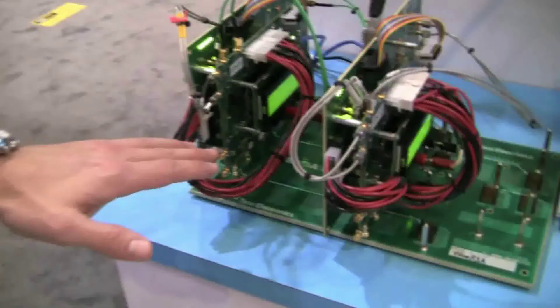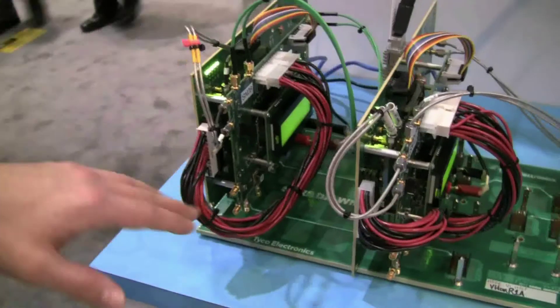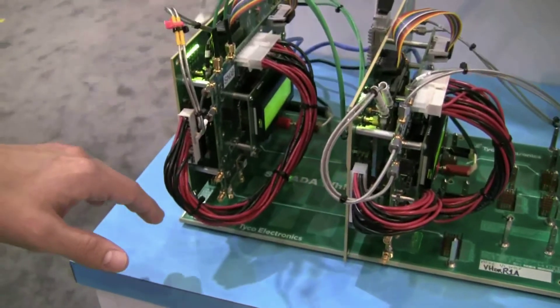Over here we have two daughter cards plugged into a backplane. We have two Avago chips per board. We're driving 12 pairs through the Strata Whisper connector, all at 25 gigabits per second.